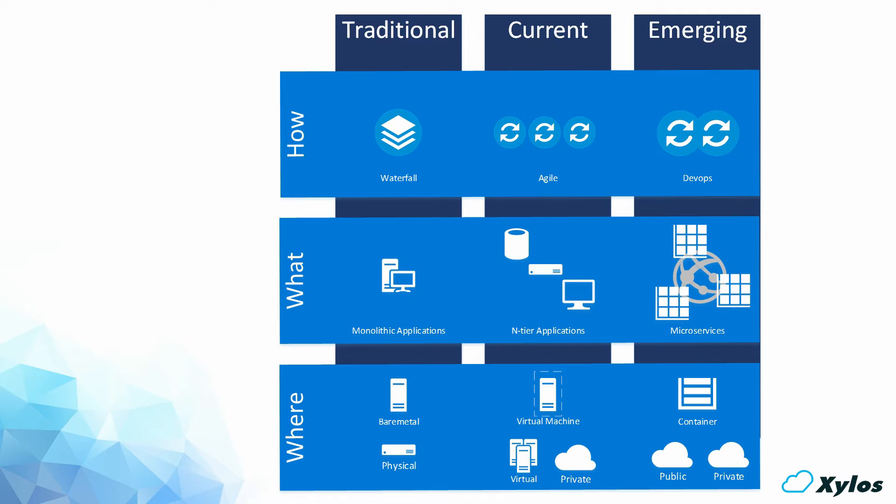Microservices means we take the n-tier application from earlier and split it into a lot of smaller services, so we can upgrade or scale them individually. Does that mean Docker is only useful in a microservices approach? No. We can use it in a hybrid way, where with the n-tier application we take the middle tier, the compute layer, and only split that part, leaving the database intact.